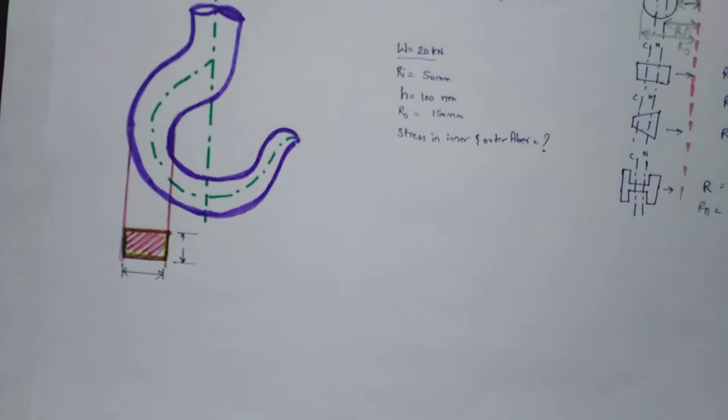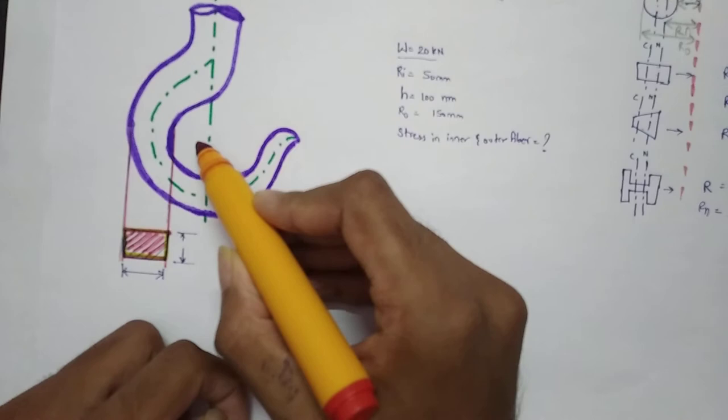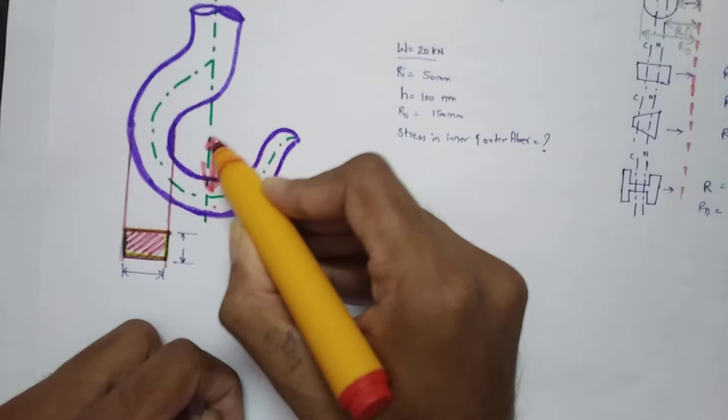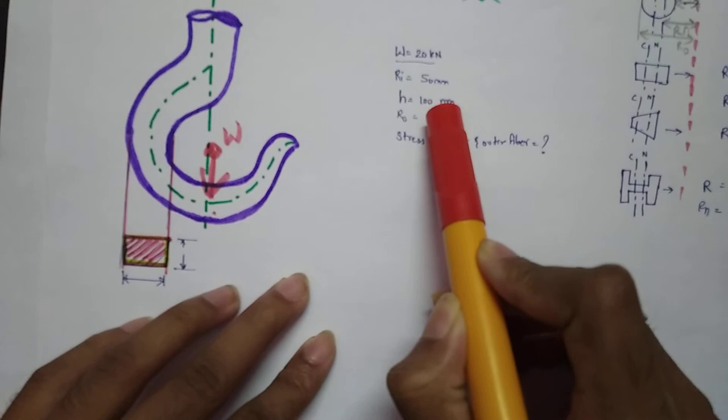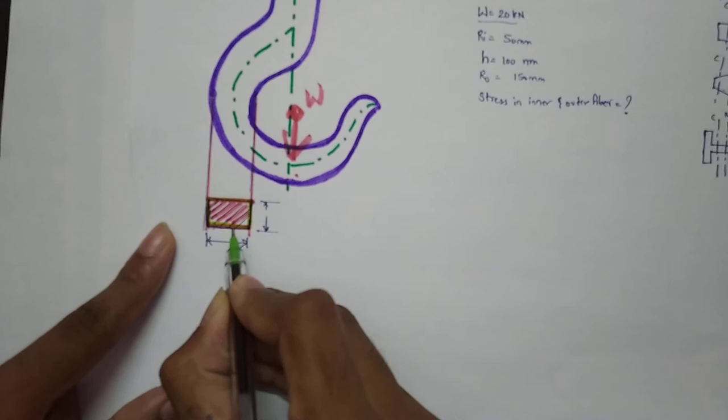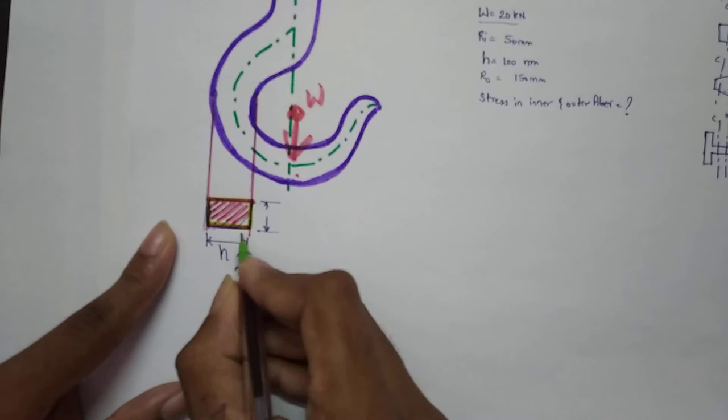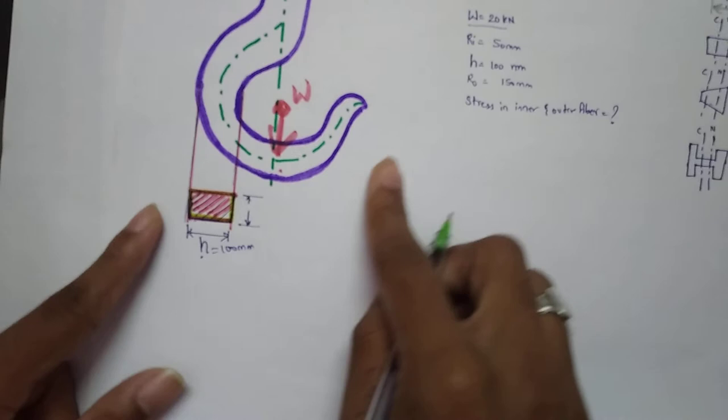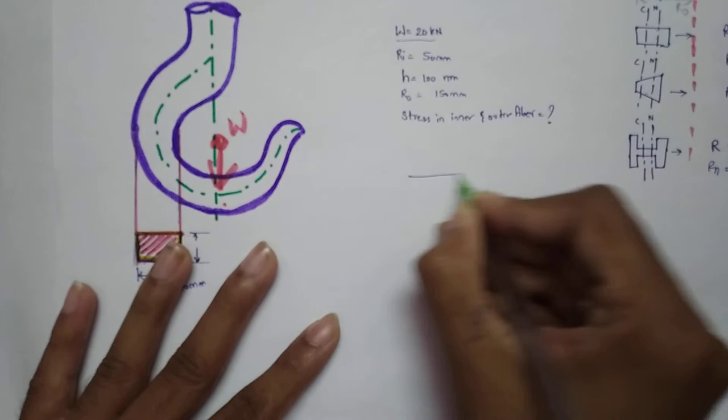In this problem, the load acting on the crane hook is 20 kilonewton, acting at the center. The given H is equal to 100 mm — H is nothing but this cross-section height, given as 100 mm.